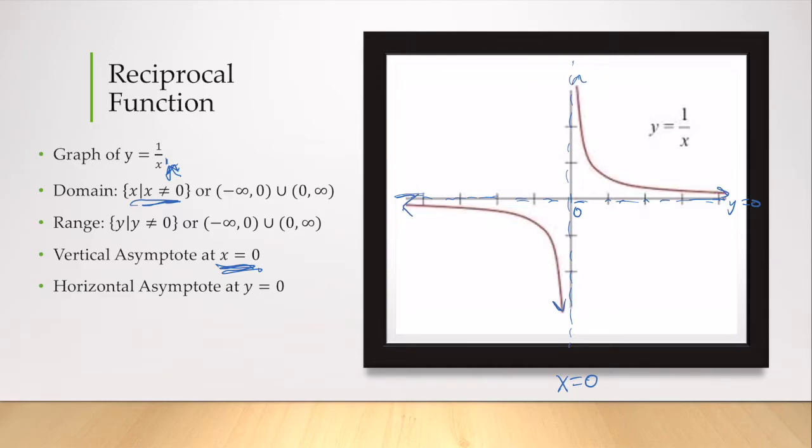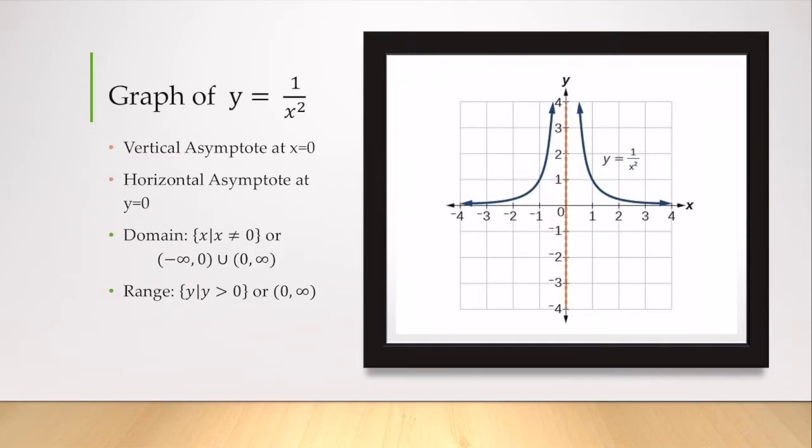As opposed to this next function, which is the graph of y equals 1 over x squared, because it's even, our graph has the same end behavior. It's symmetrical.